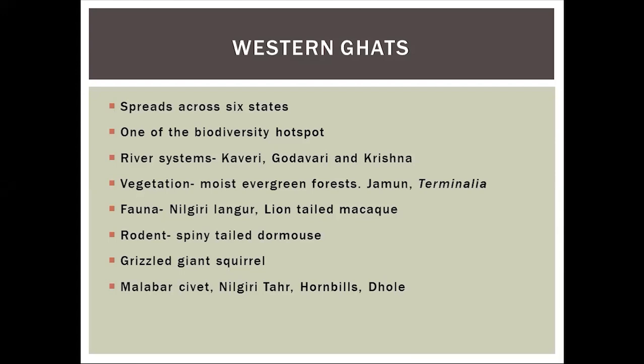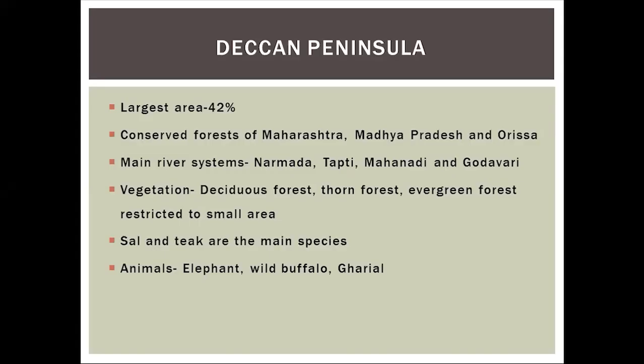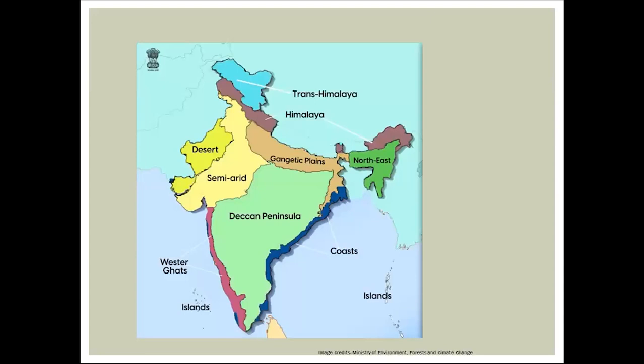Today we will be looking at three more biogeographic zones. The first one is the Western Ghats, which is present in the western part of the country. It is a narrow strip that you can see on the map — the pink colored one is the Western Ghats found on the western part of the country.